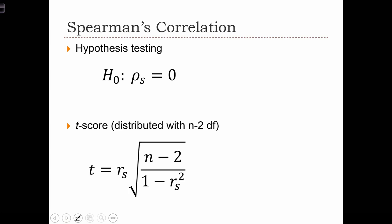If we want to do some inferential testing, we start with the null hypothesis that the population correlation is equal to 0. The alternative is usually the non-directional case, just that there is some correlation. And just as before, we can compute a t statistic with this formula, and the statistic is going to be distributed with n minus 2 degrees of freedom.